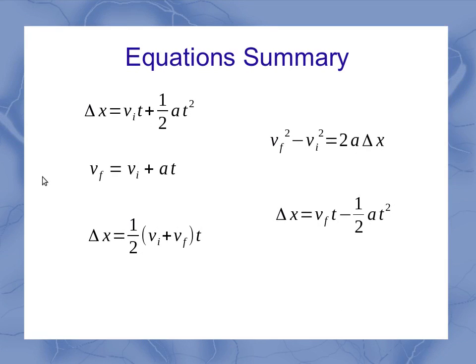So when we go back and look at our overall equation summary, all of the equations have a in them, except for this one right here, which has delta x, vi, vf, and t. So that's the one we're going to want to select in order to have the conditions that we set forward in our problem.